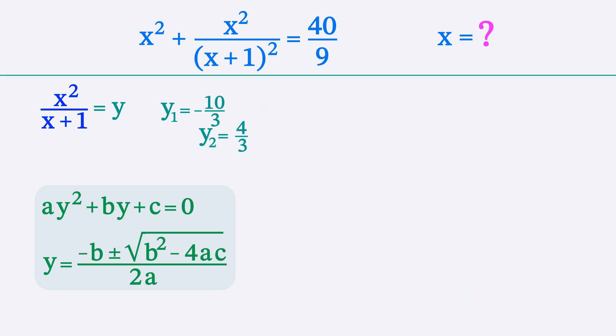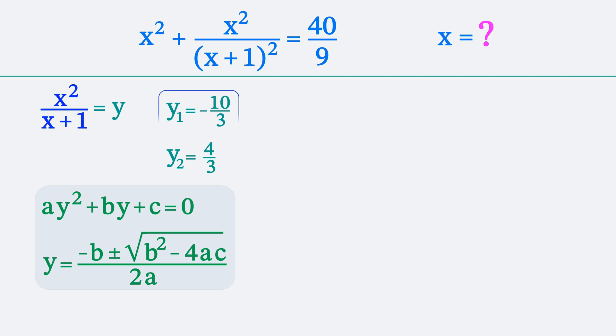Returning to the original variable, we substitute the value of y and get two equations. The first equation x squared divided by x plus 1 equals negative 10 thirds. Multiplying the elements of the equation according to the property of proportion and rearranging gives us a quadratic equation.